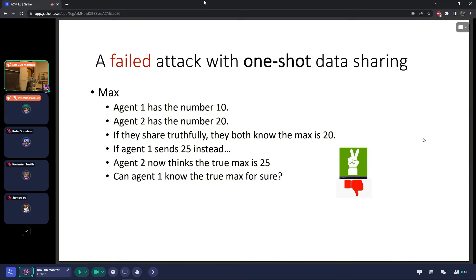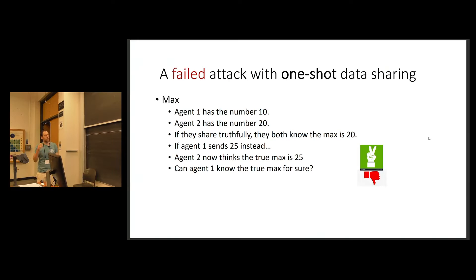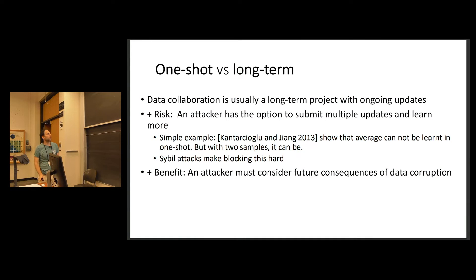So this attack manages to mislead the other agent. The reported computation result would be 25. But now agent one is confused. We as the all-knowing audience know that actually the result should be 20, but by agent one's information set, it only knows that it had 20, and the result was 25. But maybe the other agent has like 22 or 23, and then the maximum should be 23. So it cannot really know in fair and precisely what is the true result of the computation.